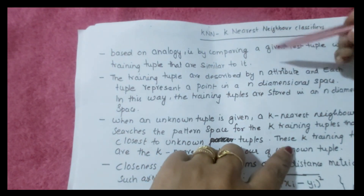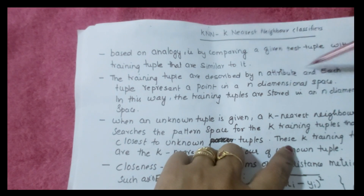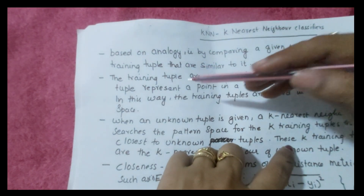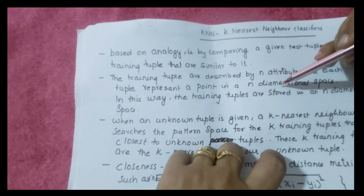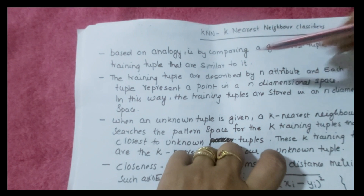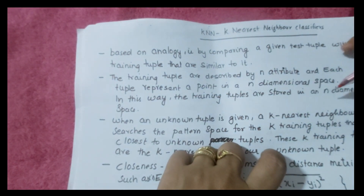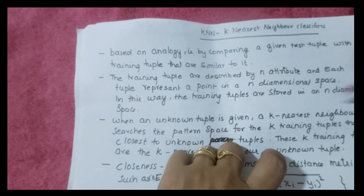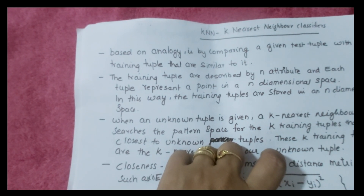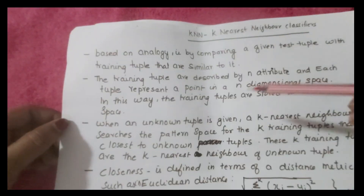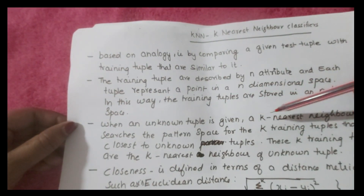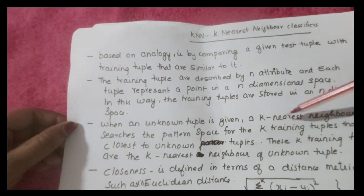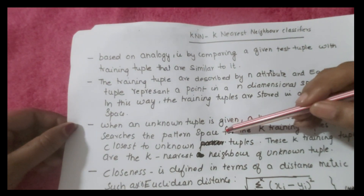The training tuples are described by n attributes, and each tuple represents a point in n-dimensional space. In this way, the training tuples are stored in an n-dimensional space. When an unknown tuple is given, the k-nearest neighbor algorithm searches this pattern space.